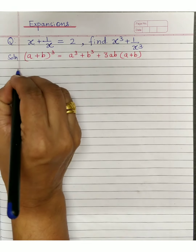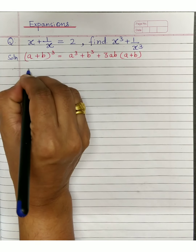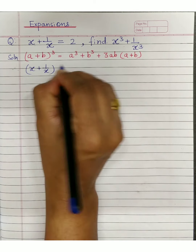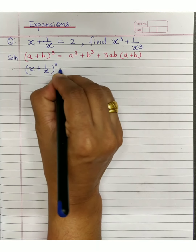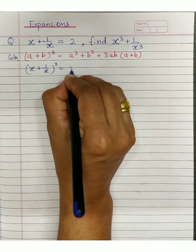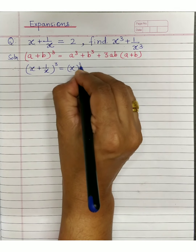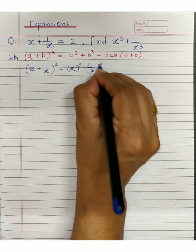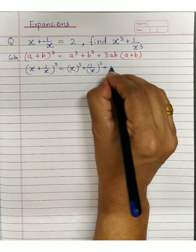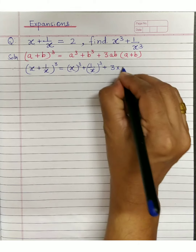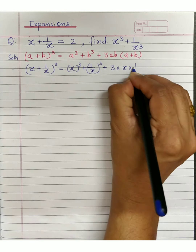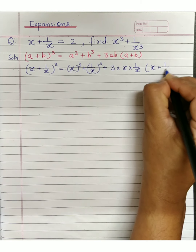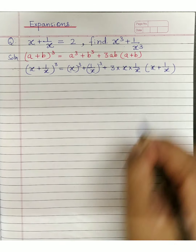Substituting here: a plus b is x plus 1 upon x. So x plus 1 upon x whole cube equals x cube plus 1 upon x cube, plus 3 into x into 1 upon x, bracket x plus 1 upon x.